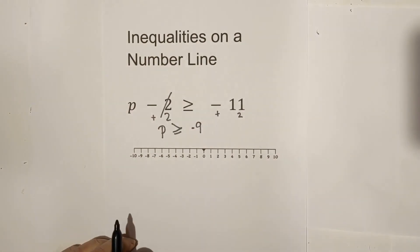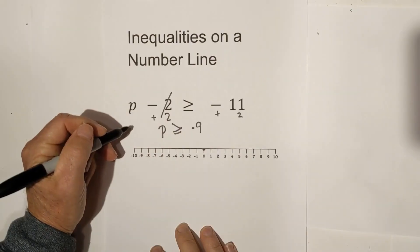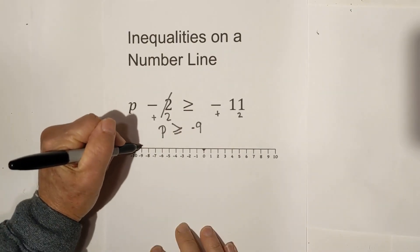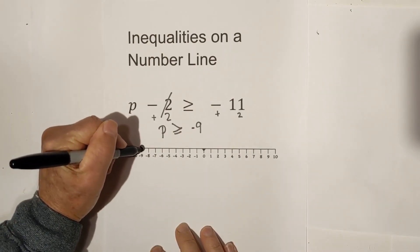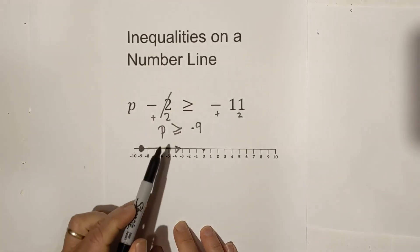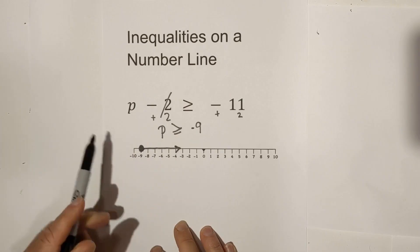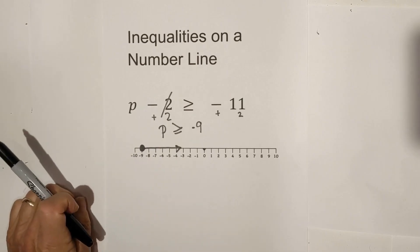So now, what do we do next? Here is negative 9, and it's going to be greater than or equal to, so I'm going to use a closed circle. I'm going to close it and do an arrow in this direction. Whenever it is less than or equal to or greater than or equal to, you use a closed arrow.